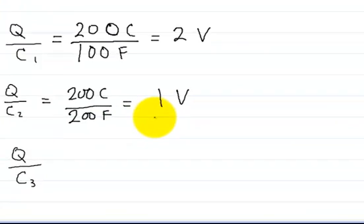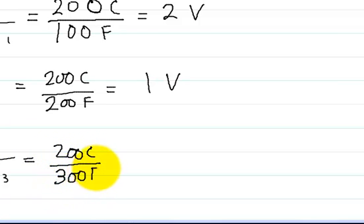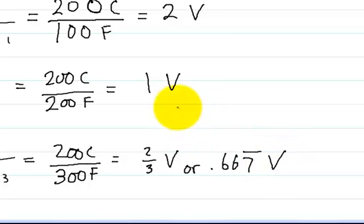For C3, we have 200 coulombs divided by 300 farads, which equals 2/3 of a volt or 0.667 volts. As you can see, we were correct.